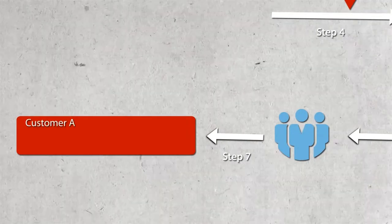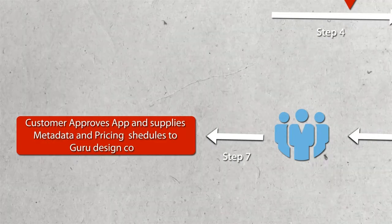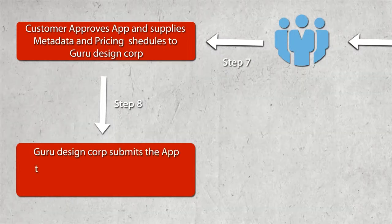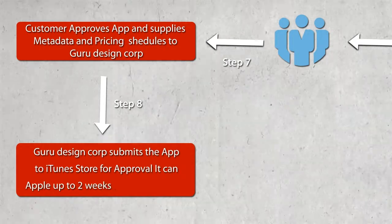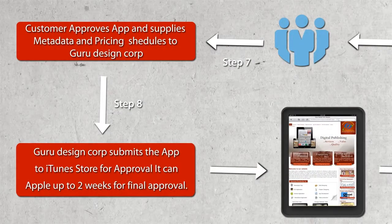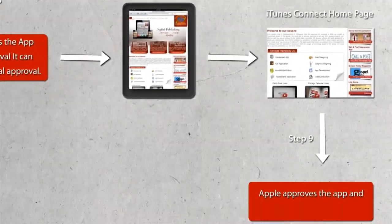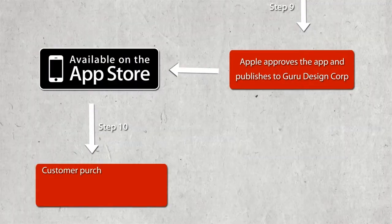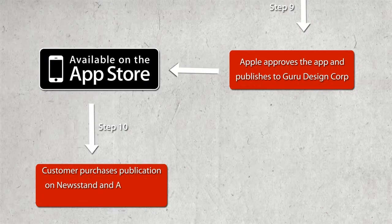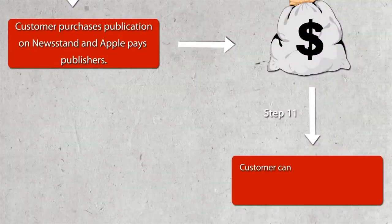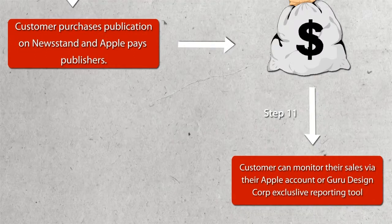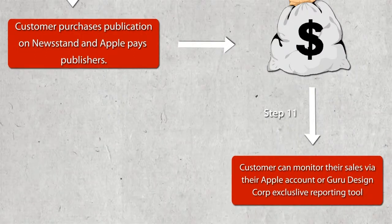Step 7: The customer approves the app and supplies metadata and pricing schedules to Guru DesignCorp. Step 8: Guru DesignCorp submits the app to the iTunes Store for approval. It can take up to two weeks for final approval. Step 9: Apple approves the app and publishes it to Guru DesignCorp. Step 10: The customer purchases the publication on Newsstand and Apple pays the publishers. Step 11: Customers can monitor their sales via their Apple account or Guru DesignCorp's exclusive reporting tool.